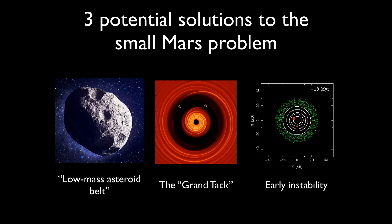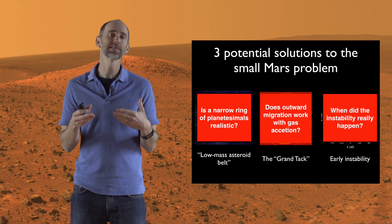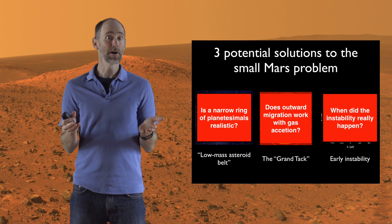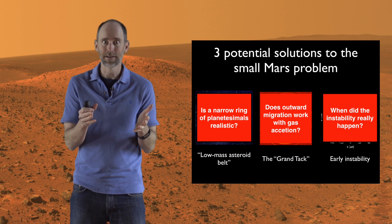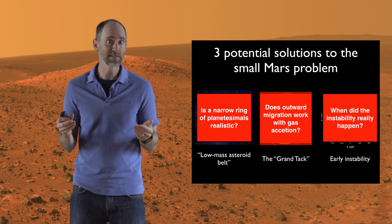That leaves us with three different possible solutions to the small Mars problem — three different evolutionary pathways of the early solar system that can explain why it looks like it does today. Yet each has some issues. The low mass asteroid belt model is built on forming from a narrow ring of planetesimals — is that realistic? The grand tack model is built on the migration of Jupiter and Saturn, which needs to be studied in more detail. And the early instability model requires that the instability happened early — we need to study more carefully whether that's really the case. So we have three solutions, and that's where we stand going forward.